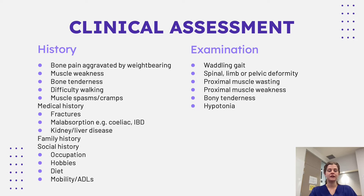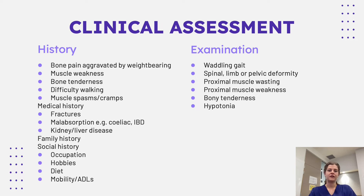In terms of examination, there aren't many particularly specific findings, but patients can have a waddling gait. They can have deformities similar to those seen in rickets, though this is fairly uncommon. They can also have proximal muscle wasting and weakness, bony tenderness, and hypotonia — which is again related to hypocalcemia.